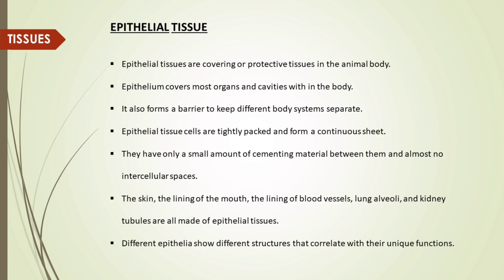Now we learn about the first type of animal tissue, that is epithelial tissue. Epithelial tissues are covering or protective tissues in the animal body. Epithelium covers most organs and cavities within the body. It also forms a barrier to keep different body systems separate. Epithelial tissue cells are tightly packed and form a continuous sheet.